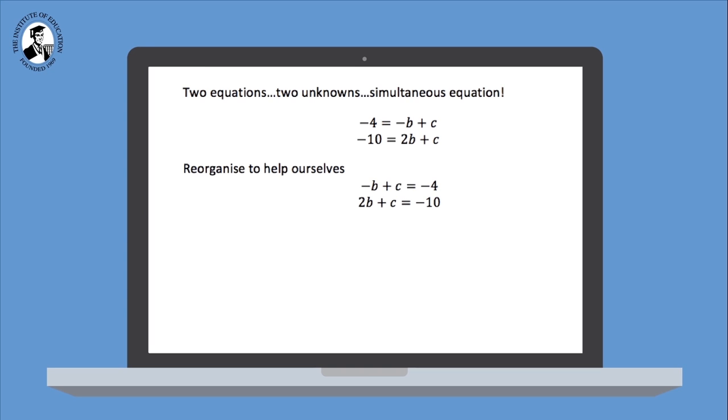Once I've got that done, I've got minus b plus c is equal to minus 4. 2b plus c is equal to minus 10. I'm going to multiply the top line by 2. I'm going to double everything on that first equation. So now, I'll have minus 2b plus 2c is equal to minus 8. And my second equation will be 2b plus c is equal to minus 10. Now I'm ready to cancel the b's.